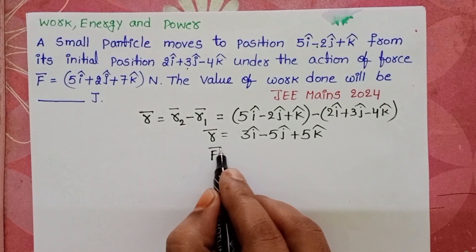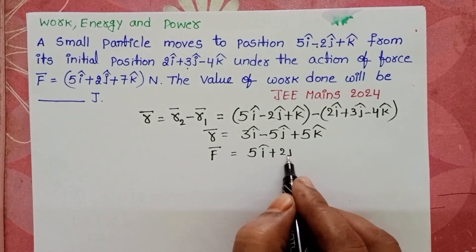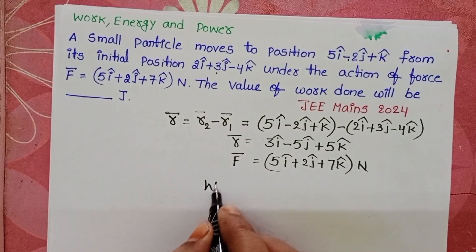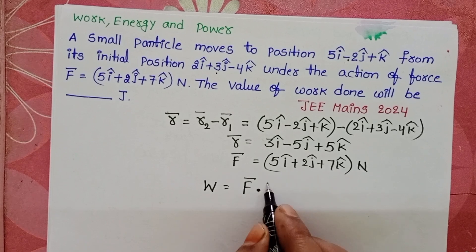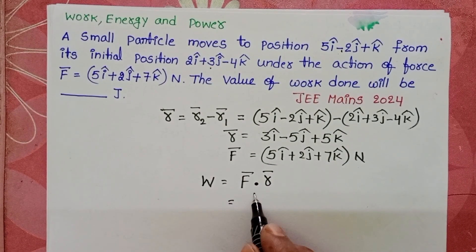And applied force also a vector. F bar equals 5i cap plus 2j cap plus 7k cap. Work done formula: W equals F bar dot r bar. Do the dot product of the two vectors.